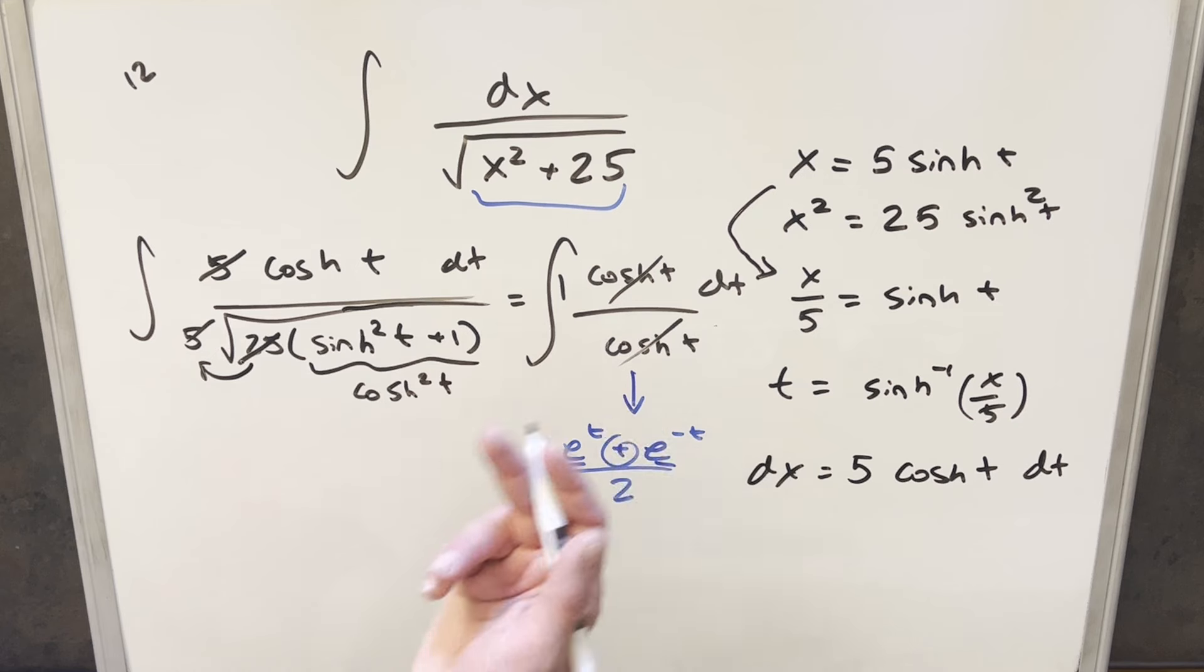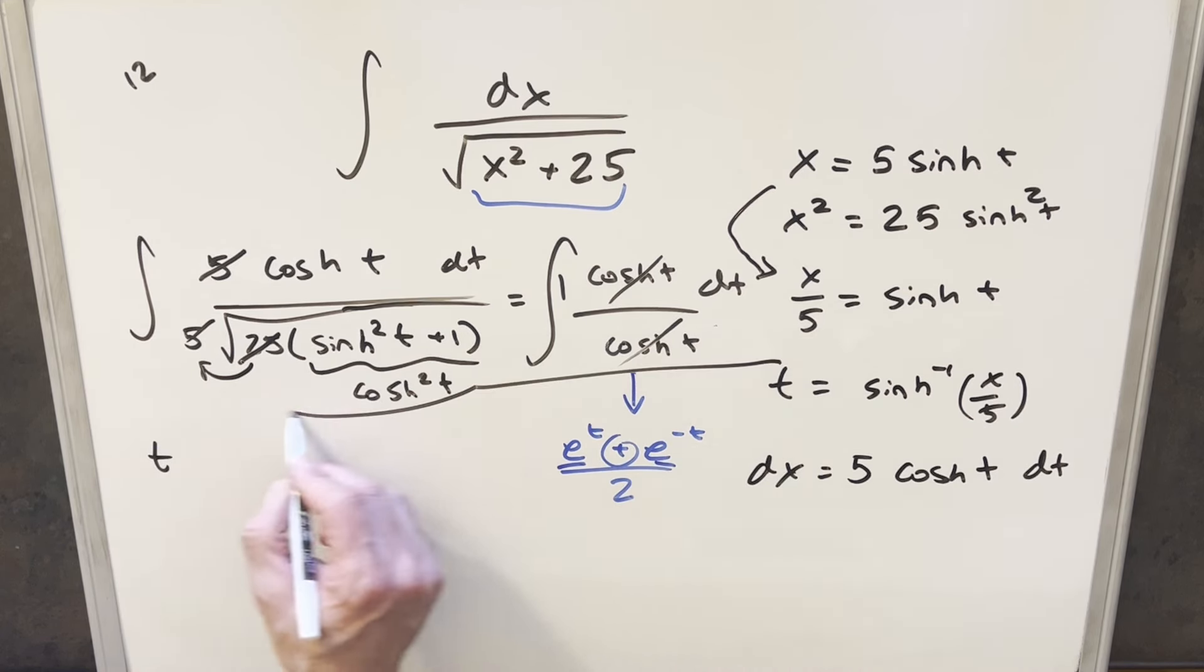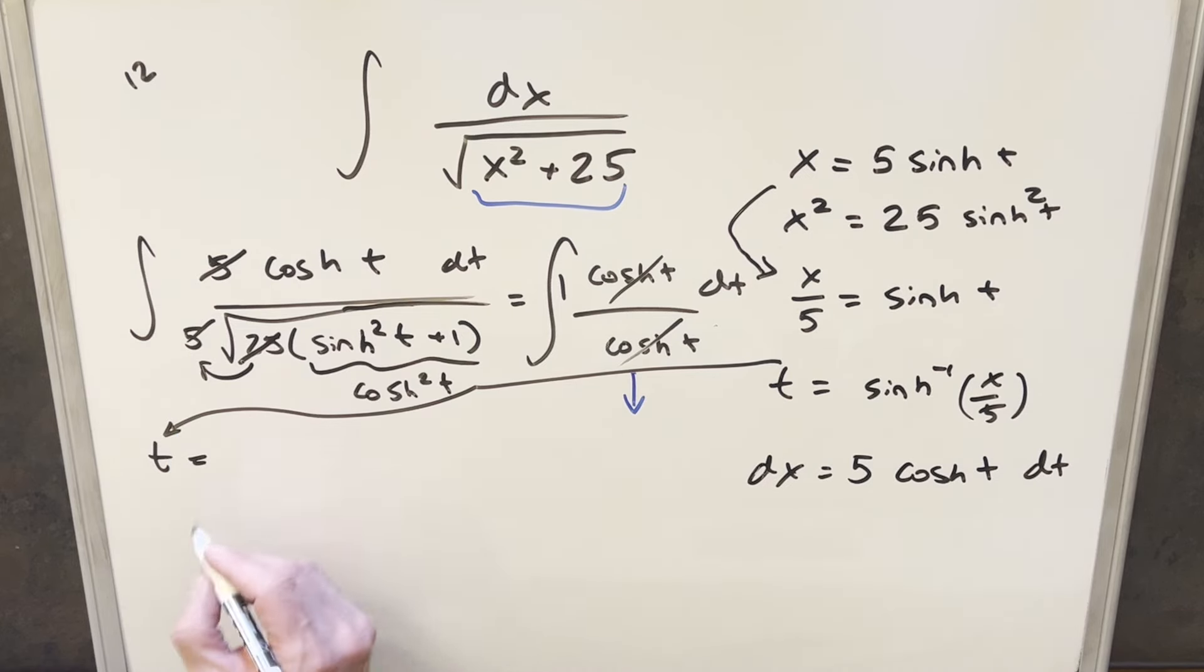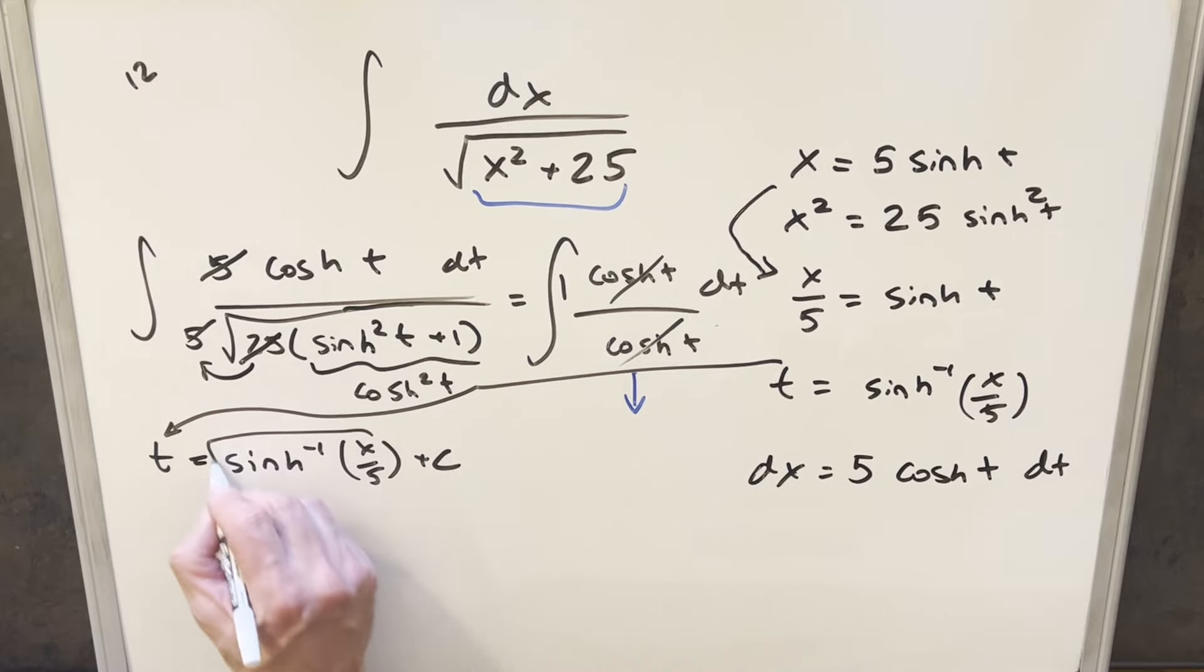Then we'll just go ahead and integrate 1, so that's just going to give me t over here. And all we need to do is back substitute in order to finish it off. So for our solution to this, we just get inverse sinh x over 5 plus C. And that's it.